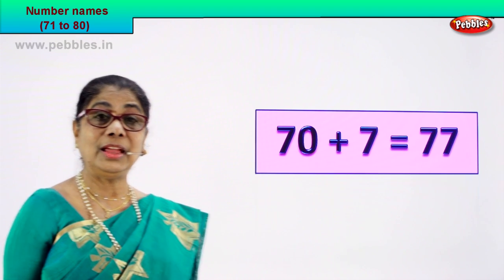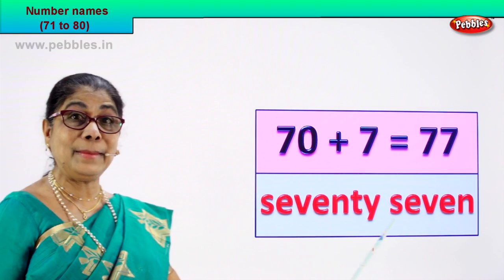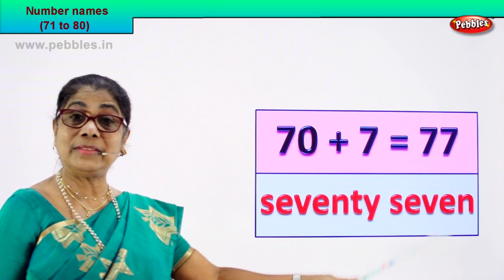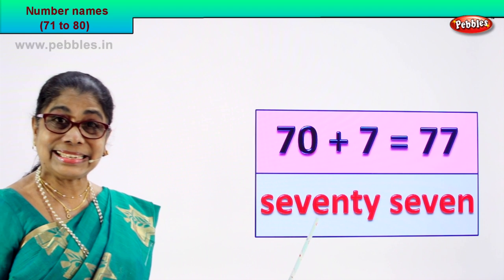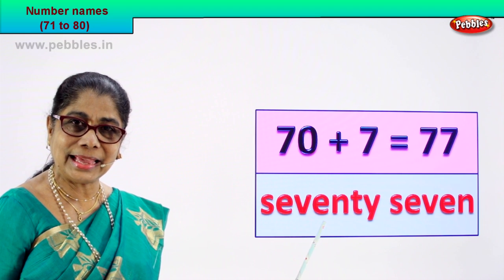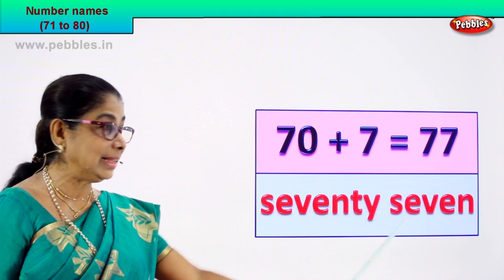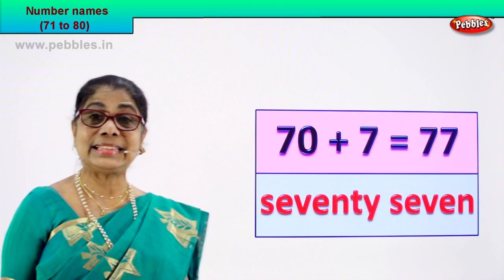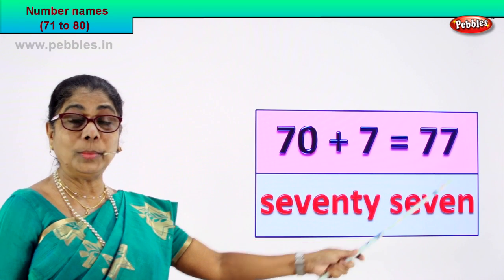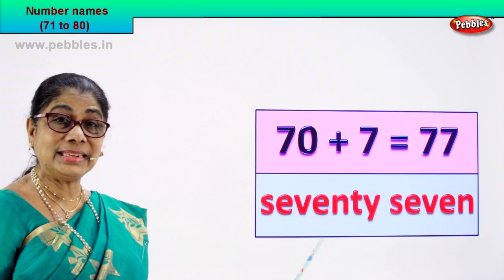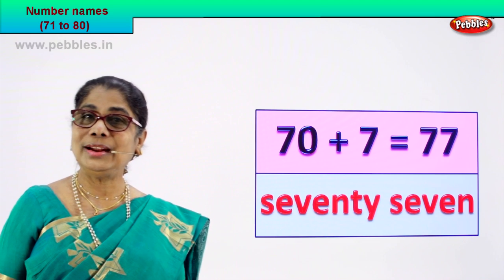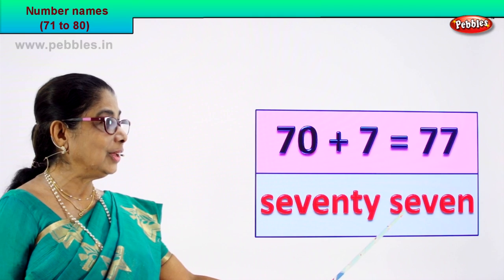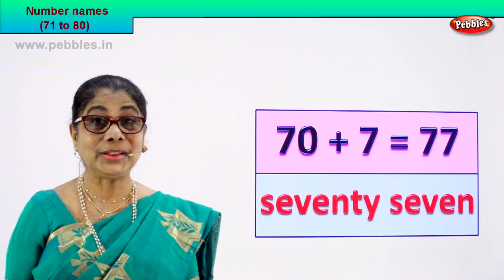Numeral 77 — you must learn to write its name. You know the spelling of 70, you know the spelling of 7, so it's easy. Spell: s-e-v-e-n-t-y — 70, then s-e-v-e-n. 77 numeral, the name is seventy-seven. You learn to spell and write: spell 70, spell 7 — 77. Good.